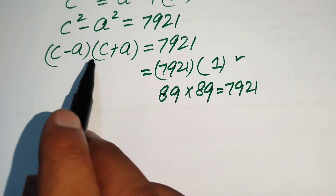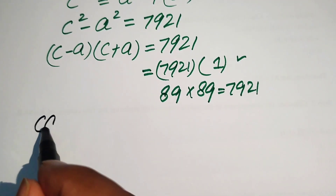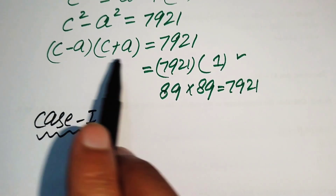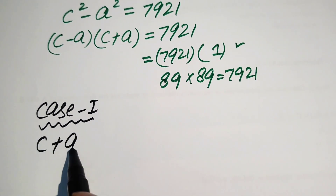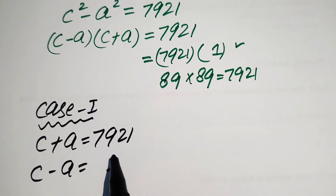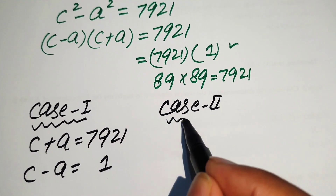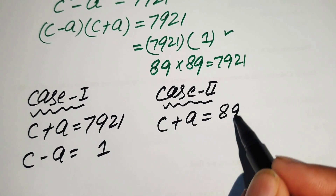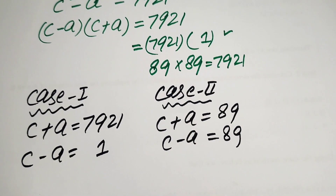We compare the left-hand side with each case. In Case 1, we match (c + a) = 7921 and (c − a) = 1. In Case 2, we match (c + a) = 89 and (c − a) = 89, since both factors are the same.